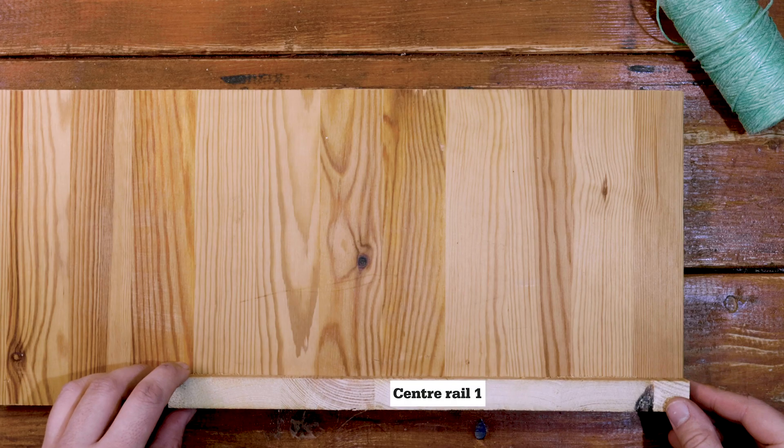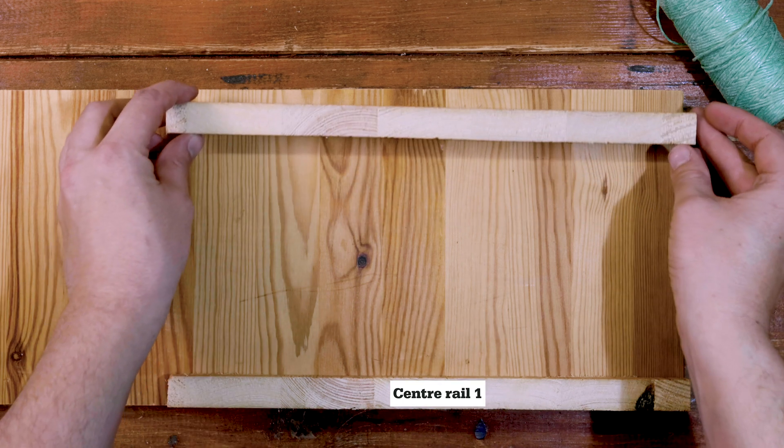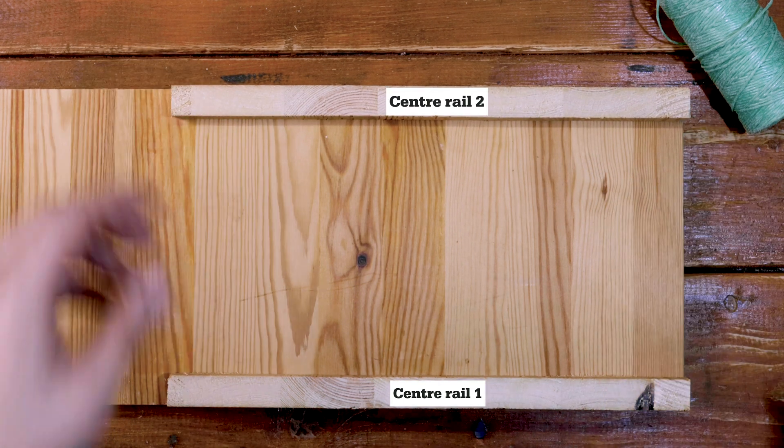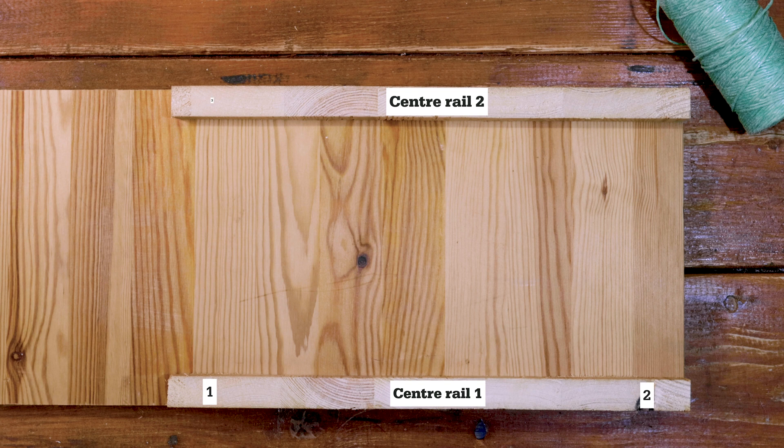So you want to start with your biggest piece of timber, and take your two centre rails, lining them up with these corners. You're going to pre-drill four holes, as you can see here, two in each rail.